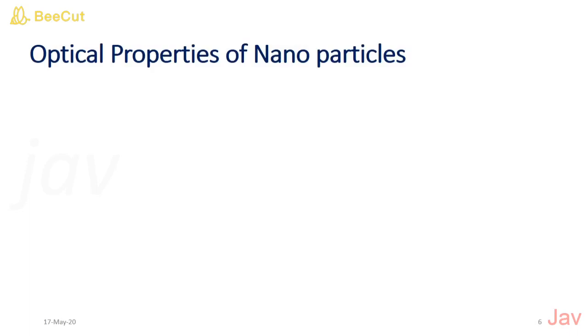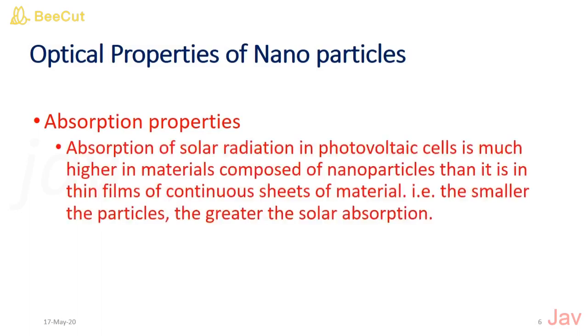Due to improved optical properties, the nanoparticles are used as absorption material in solar cell. Absorption of solar radiation in photovoltaic cells is much higher in material composed of nanoparticles than in thin film of continuous sheet of material. Smaller the particle, the greater is the solar absorption.